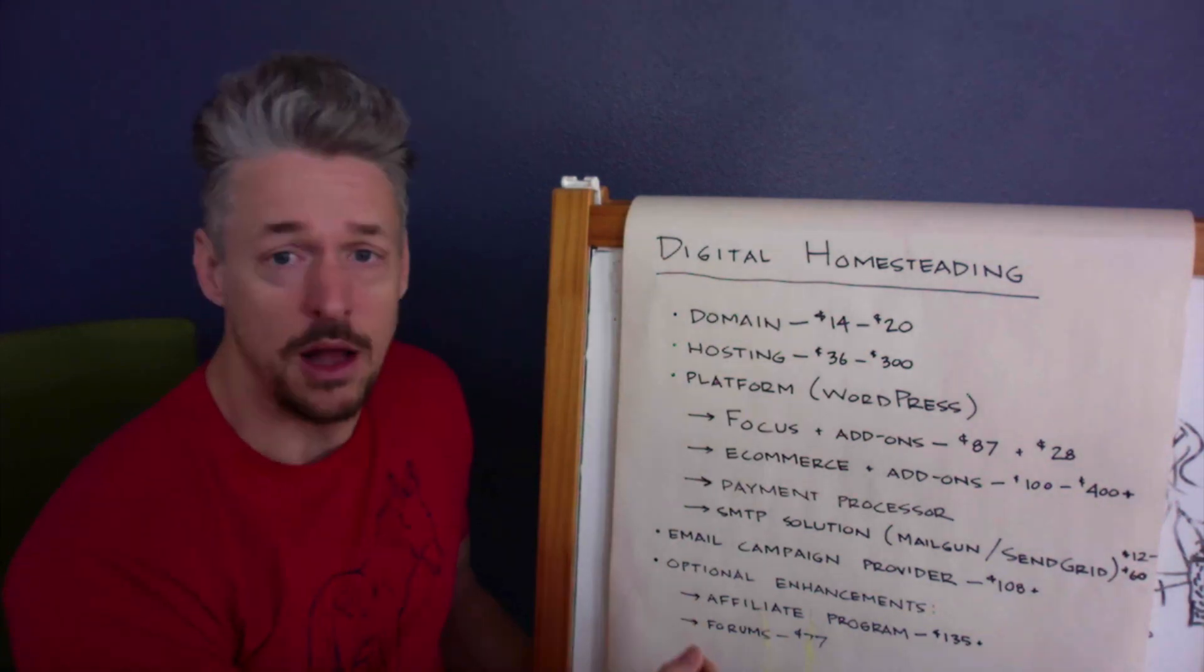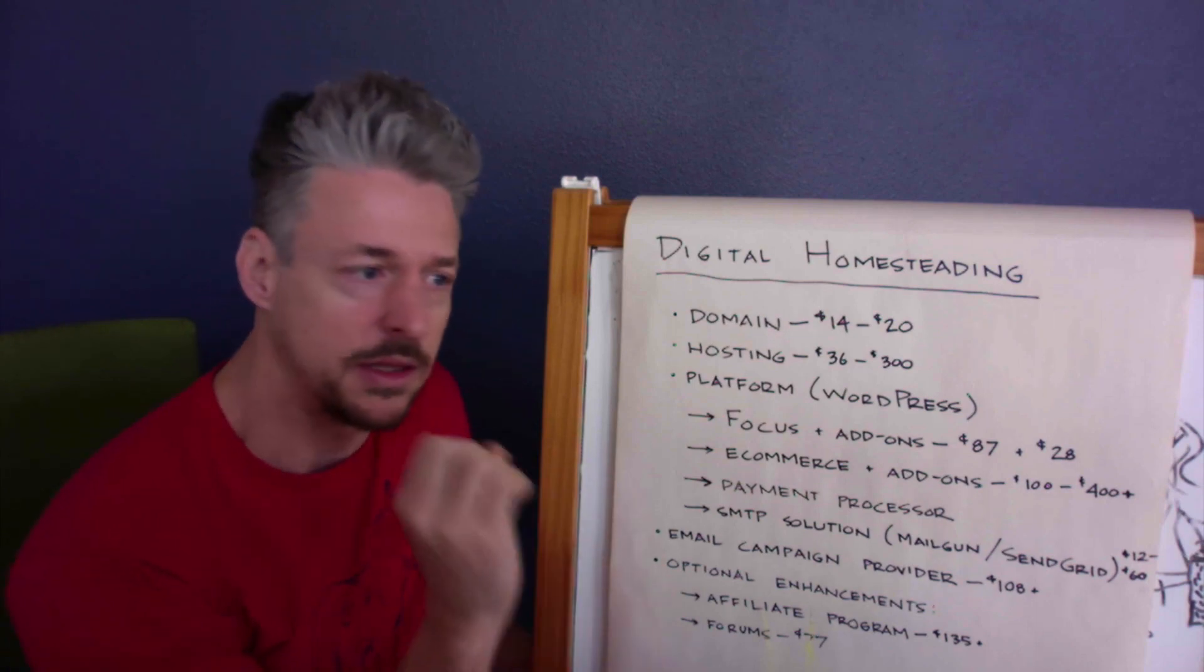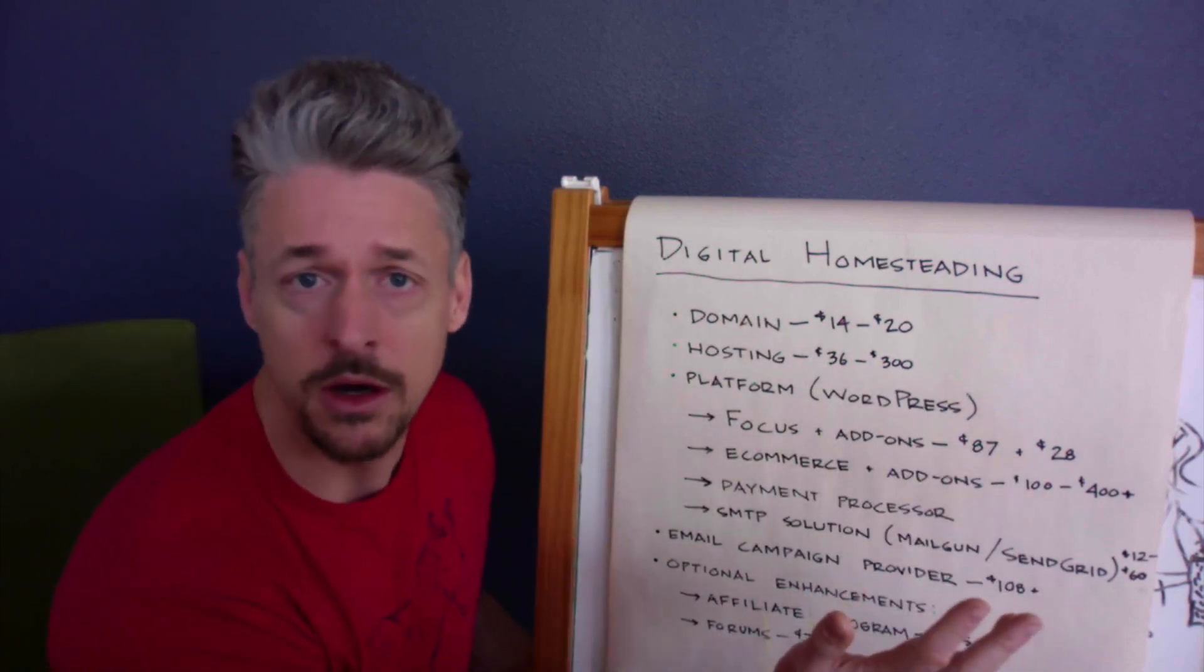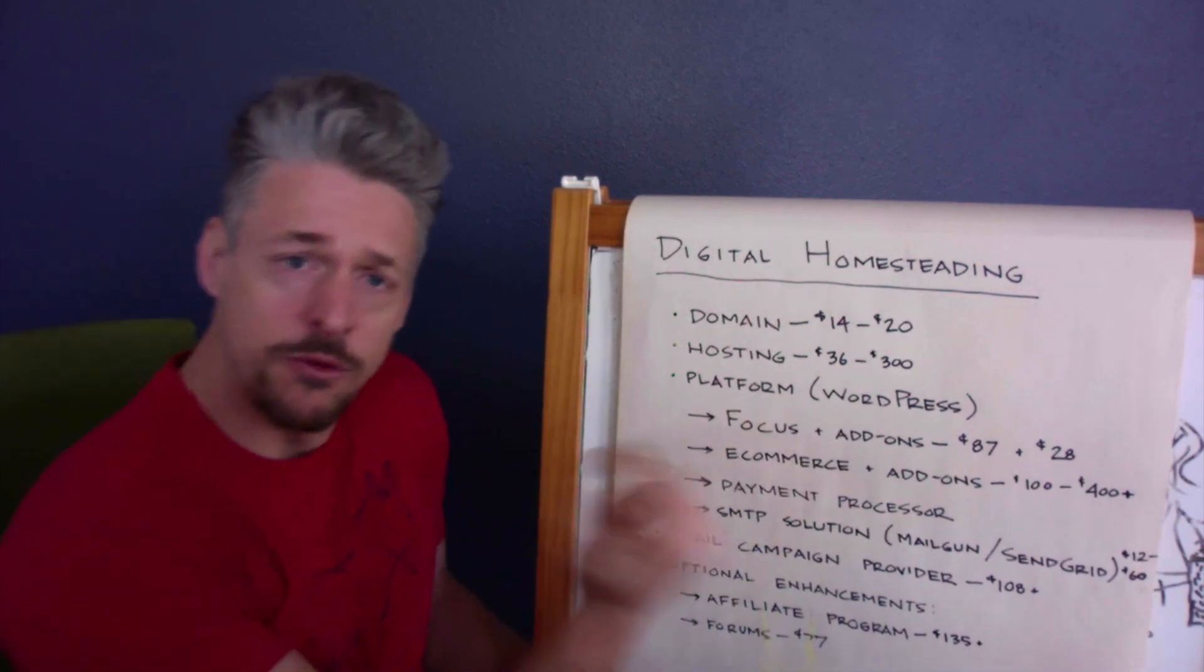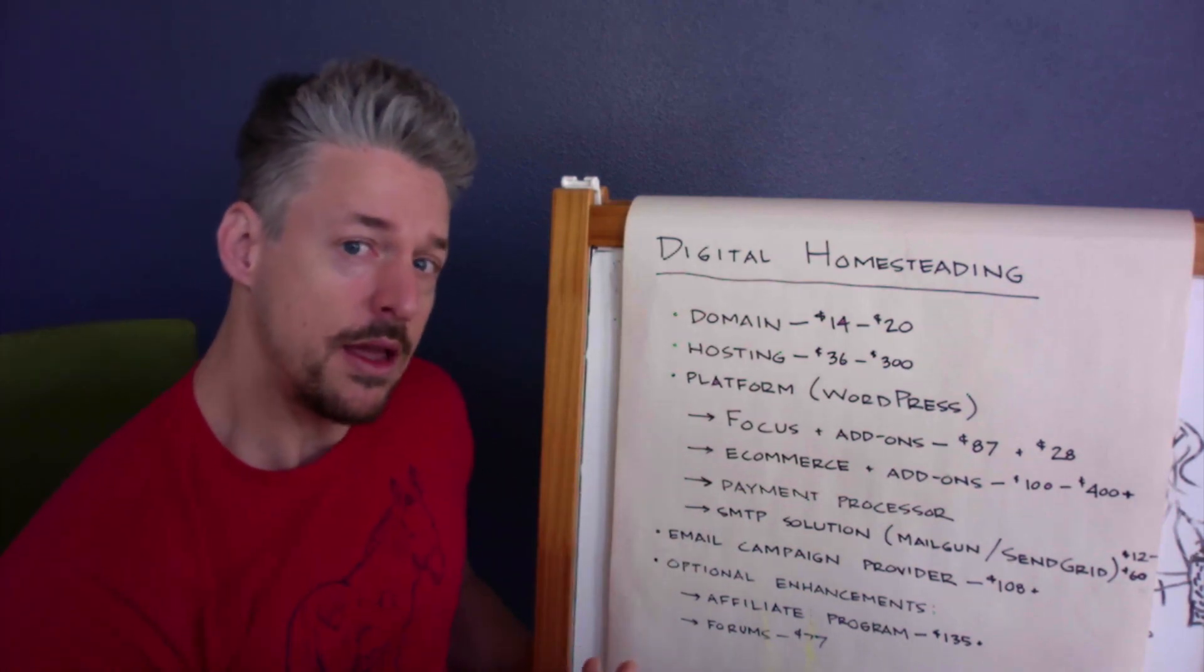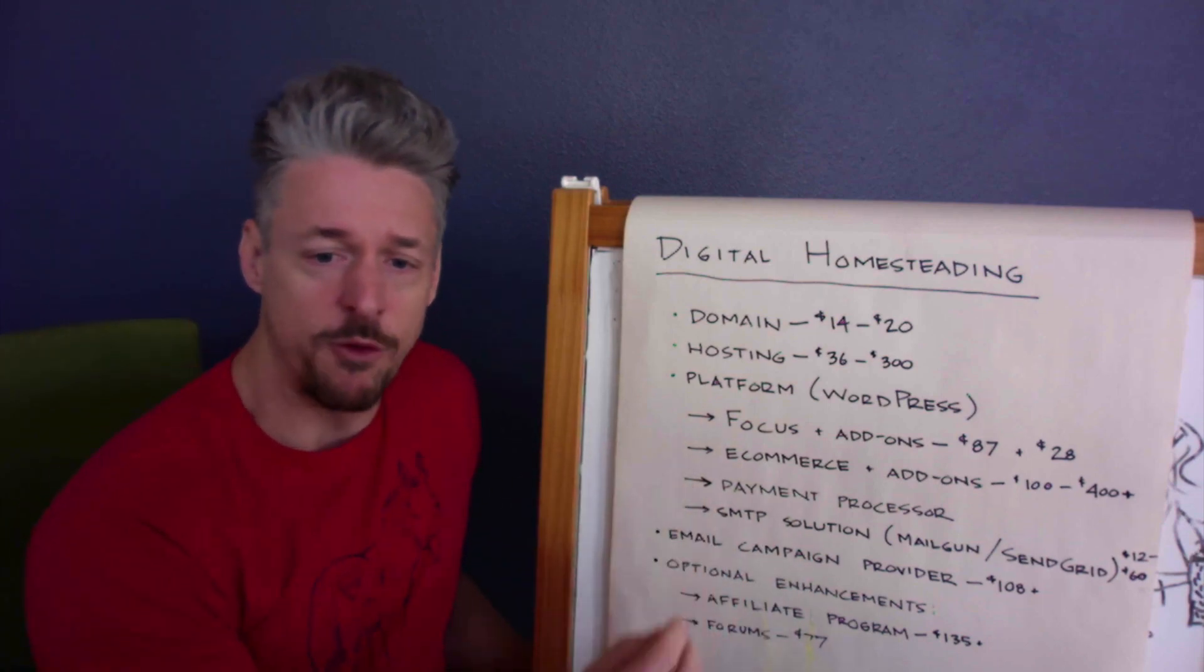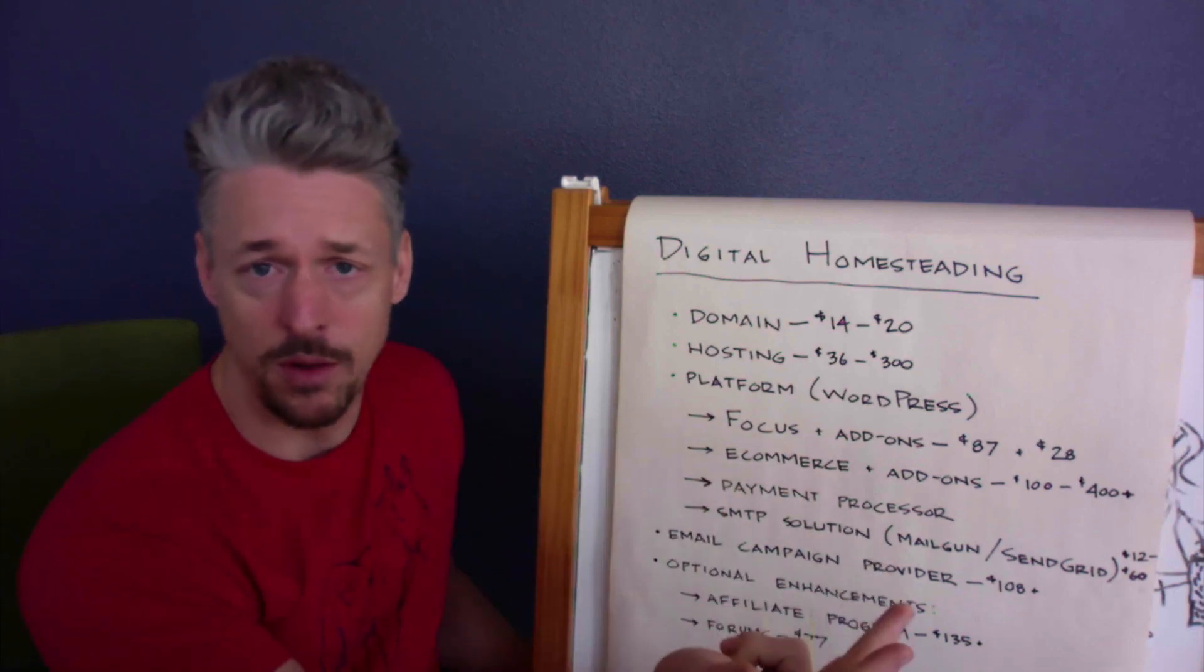And then you can go up to more premium stuff like Flywheel hosting or WordPress Engine, some sort of managed WordPress hosting, something that's really built for the job. That can take you up to about $300 per year. And if you have a really huge site with really crazy requirements, you can spend thousands of dollars a month on hosting. But for our purposes, we're going to look at a range of about $36 to $300 per year. And then of course, you've got WordPress. WordPress is free, but a basic WordPress installation doesn't really do anything. You're still going to need some other pieces to do anything worthwhile.